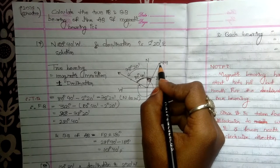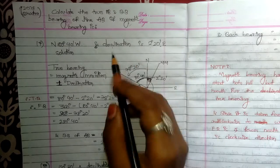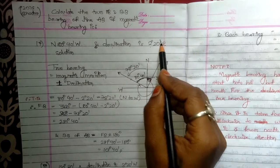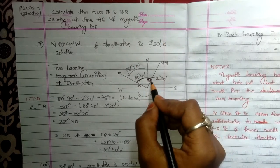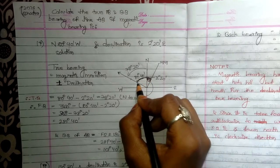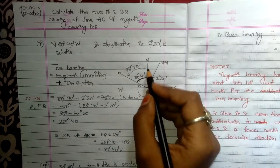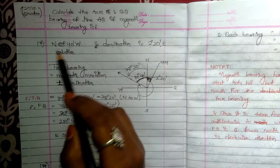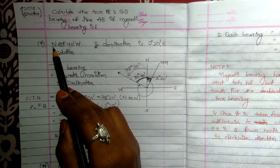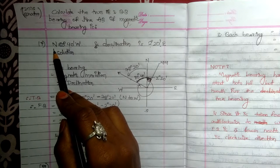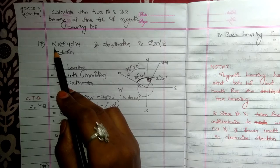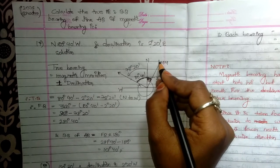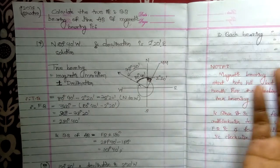The magnetic meridian is formed when the declination is formed. The declination is 2 degrees 20 minutes towards east. For the magnetic meridian, there is no true north — it is always just called north.